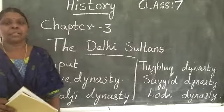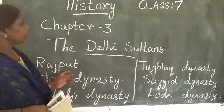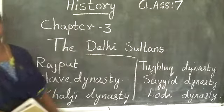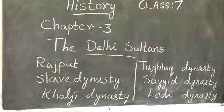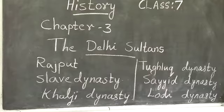Hi students, welcome to history class. Today we have to start our third lesson, that is the Delhi Sultans, the PT2 portion. You will also take a test on Delhi Sultans. This chapter is about Delhi Sultans, which came about the 12th century, after the reign of Mohammed Gori — that is, after 12th century is the period of Delhi Sultans.